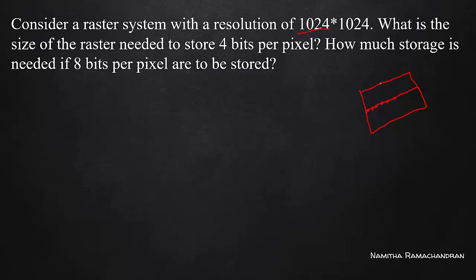How many pixels are in a vertical line? That's 1024 as well. The first 1024 means number of pixels per a single scan line, and the second 1024 indicates pixels in a vertical line. So the total number of pixels on the screen is 1024 into 1024.